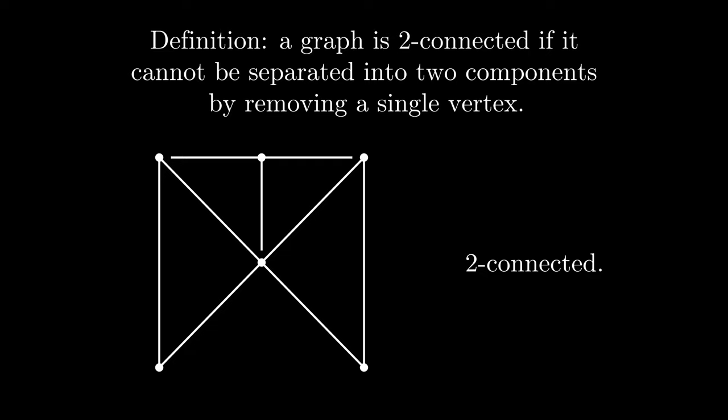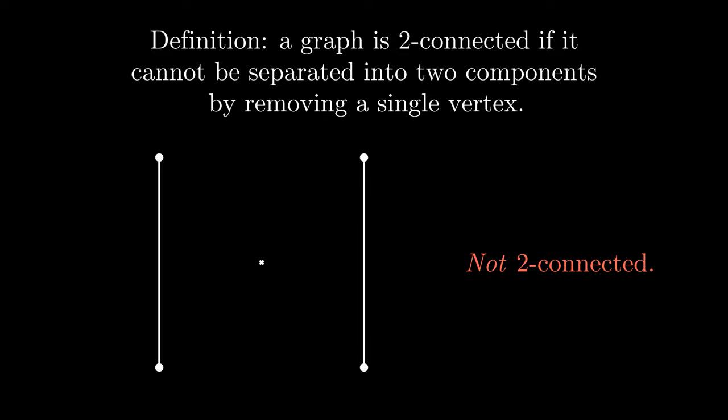However, this graph is not two-connected. When we remove this center vertex, we are left with a graph with two components. We call this vertex a cut vertex. Conceptually, a two-connected graph is all in one piece.